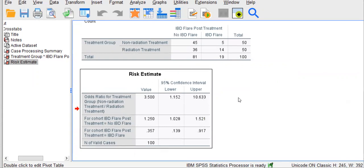The odds ratio for this study was 3.50, indicating that the odds of having experienced an IBD flare among persons receiving radiation treatment for prostate cancer was higher than those who did not receive radiation treatment. We can further note that persons receiving radiation treatment were over three times as likely, or 250% more likely, to have experienced an IBD flare post-treatment.